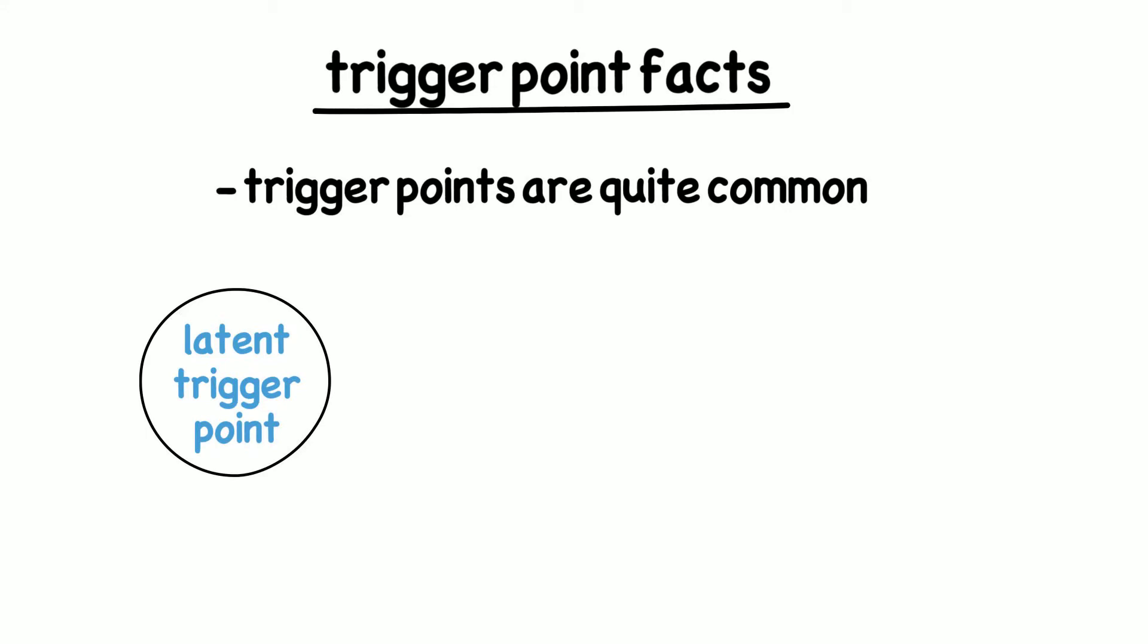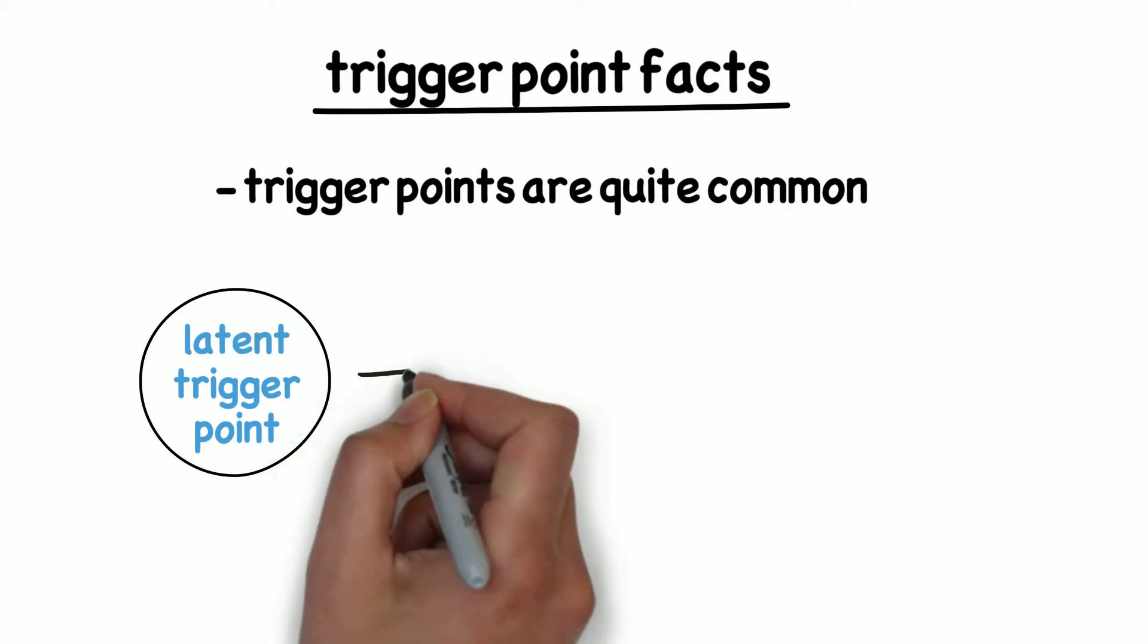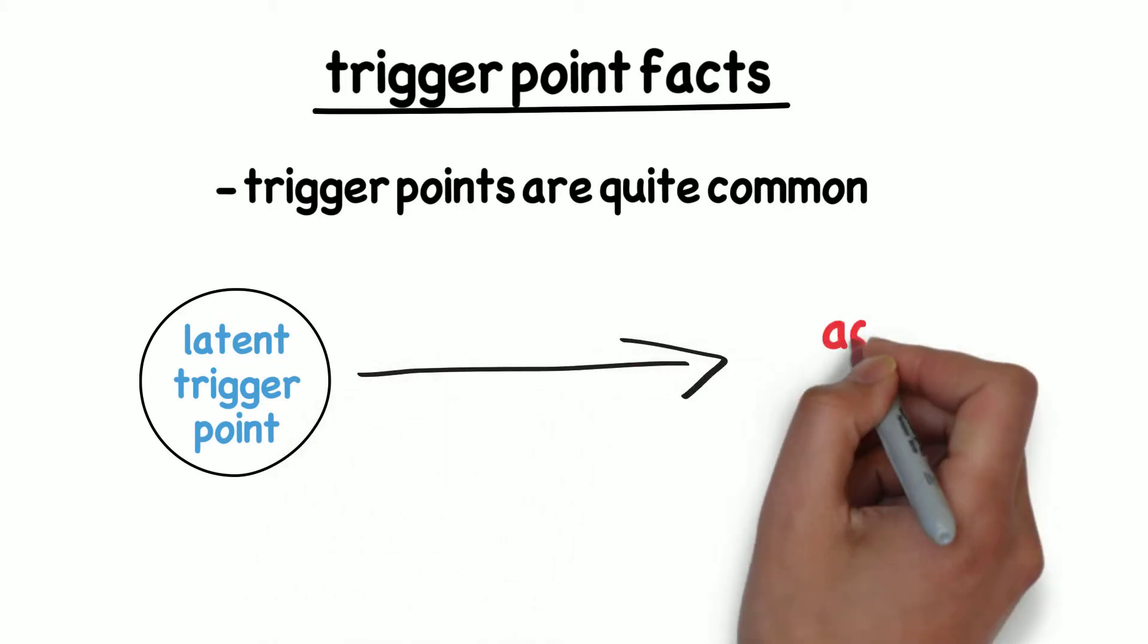Through some of the causes that we're going to discuss, that latent trigger point can begin to cause you pain, even at rest. This then becomes what we call an active trigger point.